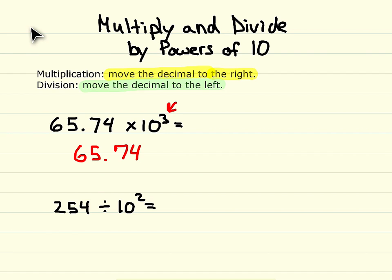So we move it one, two, and we make our last spot three. Now, in this open area right here, we have to put a zero because we had nothing for that spot. So our answer is 65,740 — the decimal point is there but it's not necessary. So 65 and 74 hundredths times 10 to the third power equals 65,740.